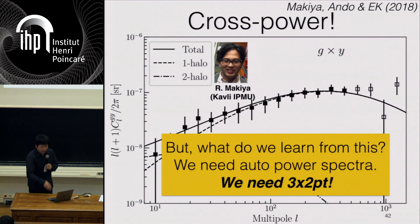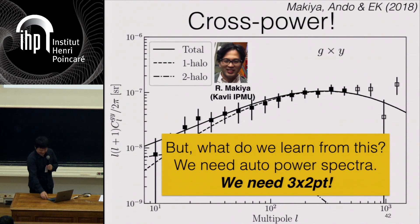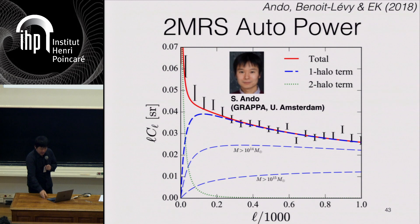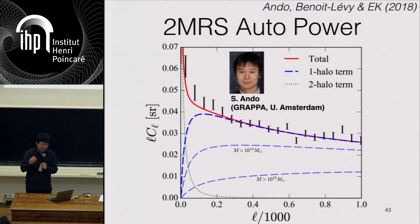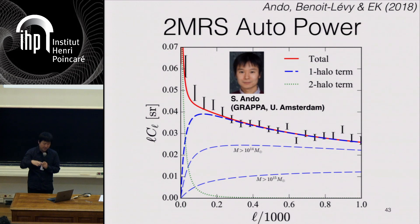But what do we learn from the cross alone? You can't learn much unless you also use the auto. So we need the full 3x2pt. Here is the auto-power spectrum of the 2MASS redshift survey. Despite how popular these 2MASS maps are, when I looked at the literature very hard, I couldn't find any auto-power spectrum of the 2MASS redshift survey. So we decided to measure it ourselves and submitted a paper.